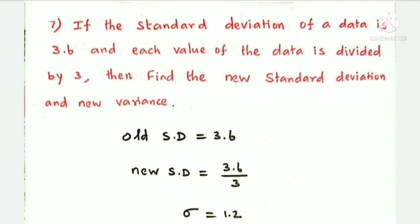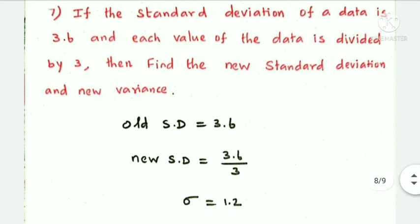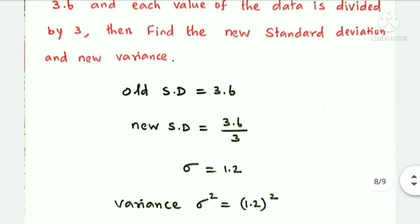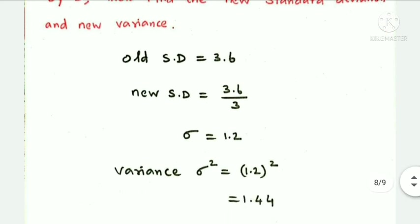When all values are divided by a constant, the standard deviation is also divided by that constant. New standard deviation equals old standard deviation divided by 3: 3.6 by 3, so the new standard deviation sigma equals 1.2. Variance equals 1.2 squared, which is 1.44.